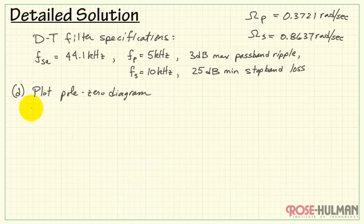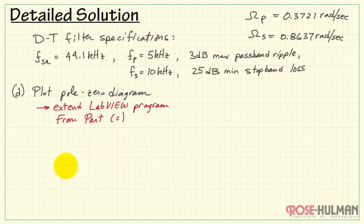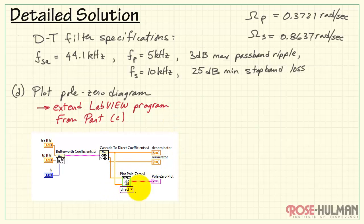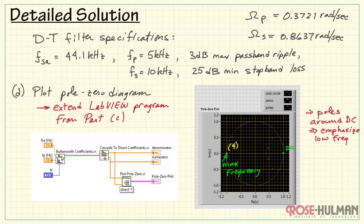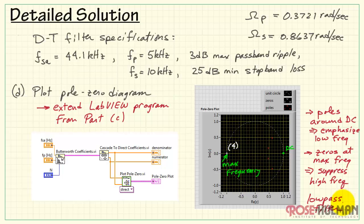Finally, in Part D, we plot the pole-zero diagram for the discrete-time filter using LabVIEW. Extending the program from Part C, the pole-zero plotting routine accepts numerator and denominator coefficients and creates the plot. The poles are congregated near DC, emphasizing low frequencies, while all four zeros are located at the maximum frequency — little omega equals pi radians per sample — suppressing high frequencies. This confirms the characteristics of a low-pass filter, completing Part D and this example.